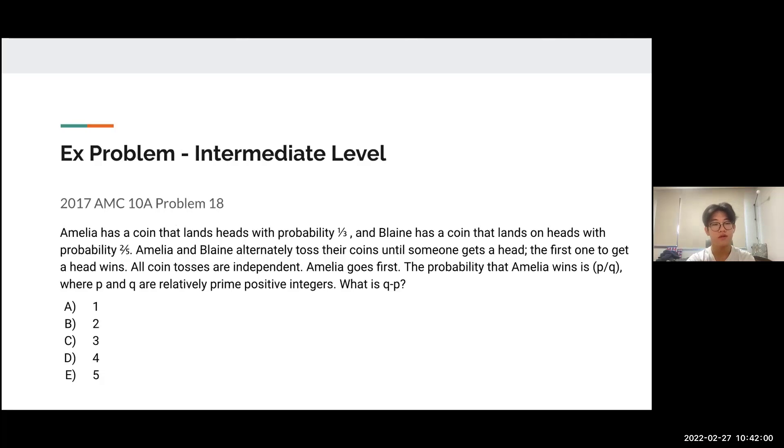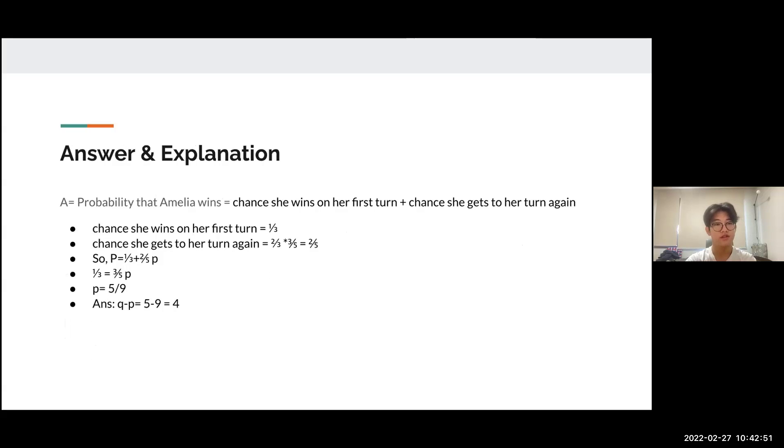The next problem is intermediate level from 2017 AMC 10A Problem 18. Amelia has a coin that lands heads with probability 1/3. Blaine has a coin that lands heads with probability 2/5. Amelia and Blaine alternately toss their coins until someone gets heads. The first to get heads wins. All coin tosses are independent. Amelia goes first. The probability that Amelia wins is P/Q, where P and Q are relatively prime positive integers. What is Q minus P? This problem is more complicated because we must consider the scenario where Amelia wins in the first round and the possibility of Amelia not winning in the first round. It continues, making it more challenging.